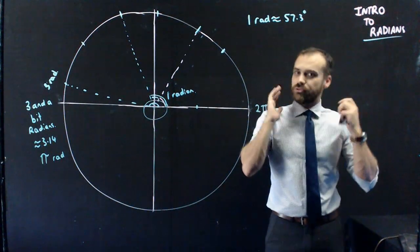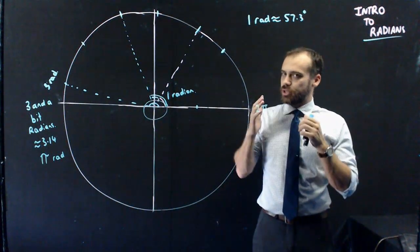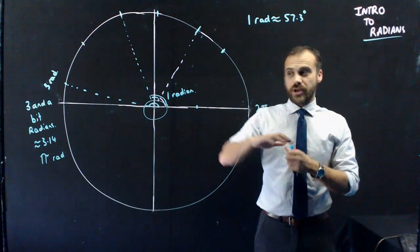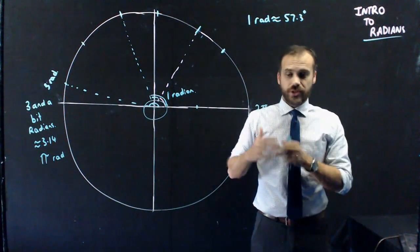So, that's the introduction to radians. That's what they are. We're going to use them because angles are all about circles, and circles are all about pi, and that's why we're going to use radians.